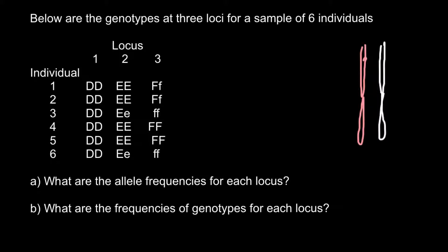Here we may have a locus, which is just a fragment on the chromosome. And here we may have a gene — for example, gene D. On the maternal chromosome we may have allele capital D, and on the paternal chromosome also allele capital D. An allele is just a form of the gene, and even a single change in nucleotide sequence gives us a new allele. So in this example, at locus D, we have two identical alleles.